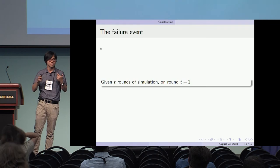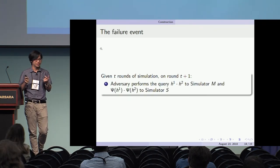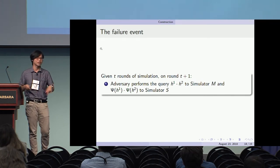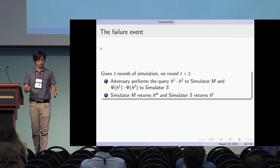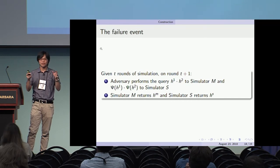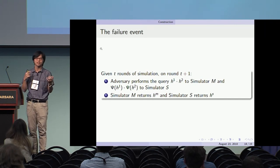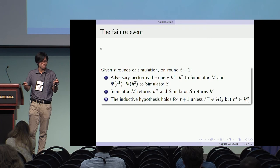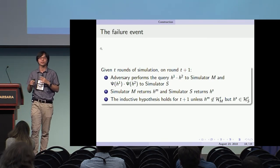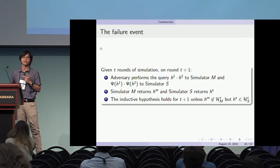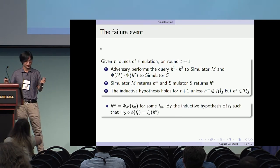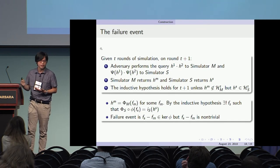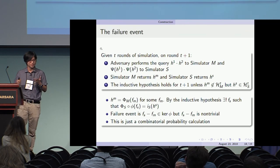In each round, the adversary asks a group query H_1, H_2 to simulator M, and the corresponding query to simulator S defined by the psi map, getting back two handles — one from each. There are essentially four cases: both handles already seen, both new, or one old and one new. One of these cases is impossible; two already satisfy the inductive hypothesis. The only problematic case is getting a new handle from the Z[A,B] polynomial ring simulator but a previously-seen handle from the generic group simulator. This reduces to an algebraic argument: this only happens if you obtain something in the non-trivial kernel of the evaluation map, and the rest is combinatorial calculation.